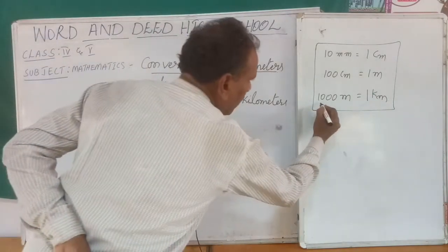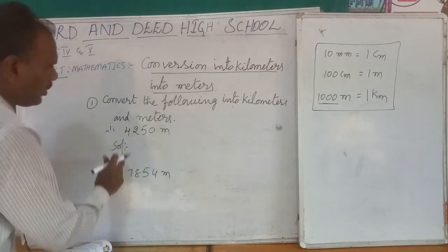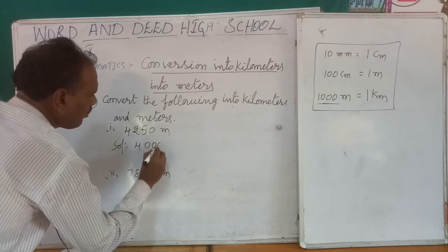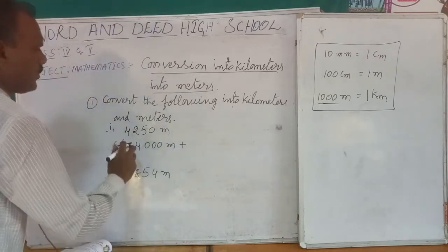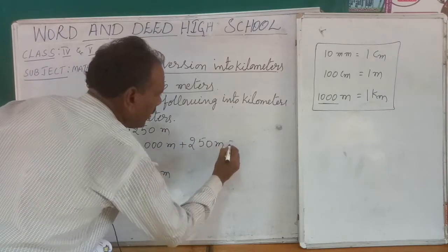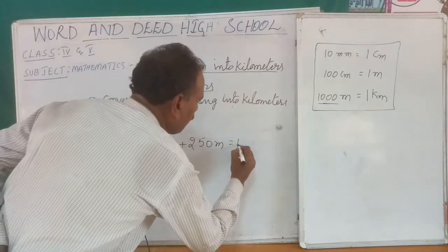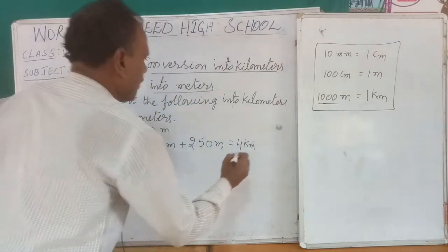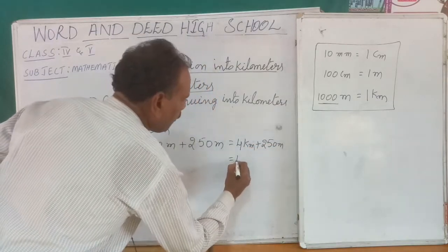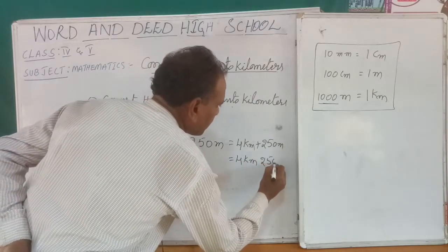We observe that 1000 meters equal to 1 kilometer. So we divide: 4,250 meters = 4,000 meters + 250 meters. 4,000 meters equals 4 kilometers, so the answer is 4 kilometers 250 meters.